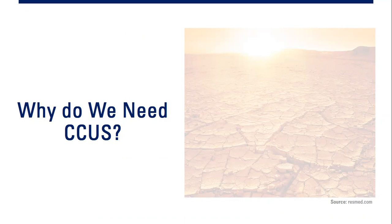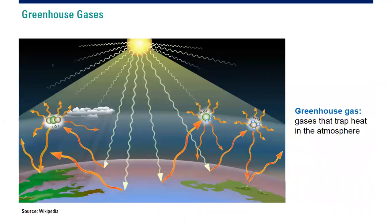When talking about CCUS, we must first start with greenhouse gases. Greenhouse gases — abbreviated as GHG — are gases that trap heat in the atmosphere. As you can see in this picture, this is our Earth, and we receive heat from the sun.